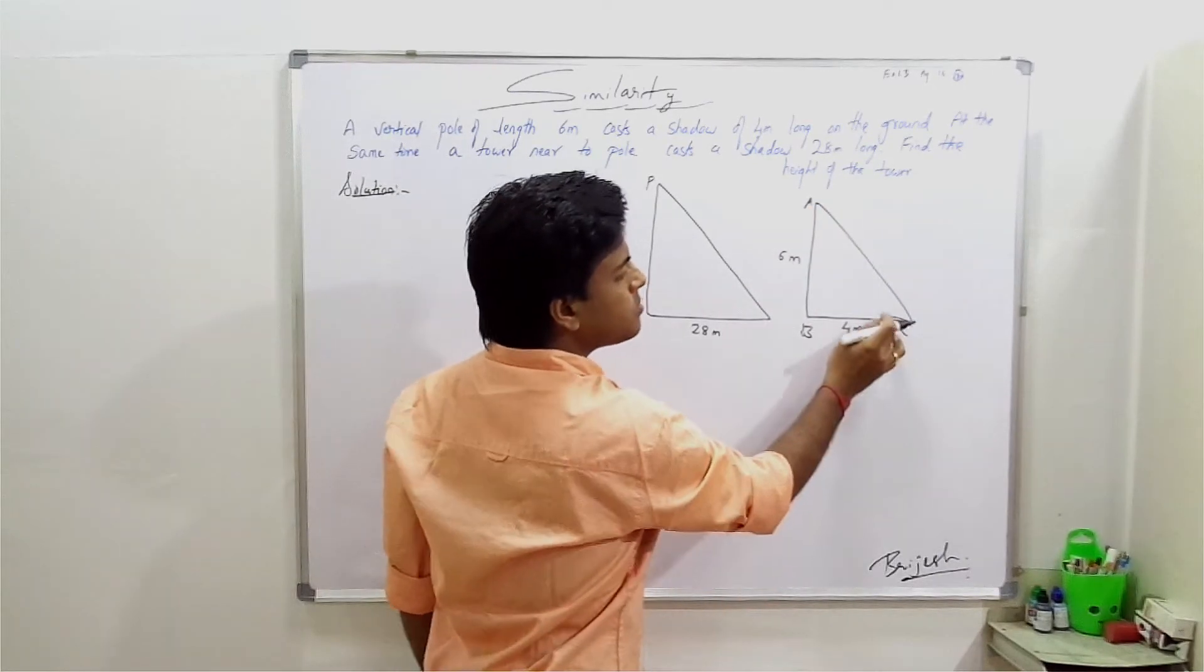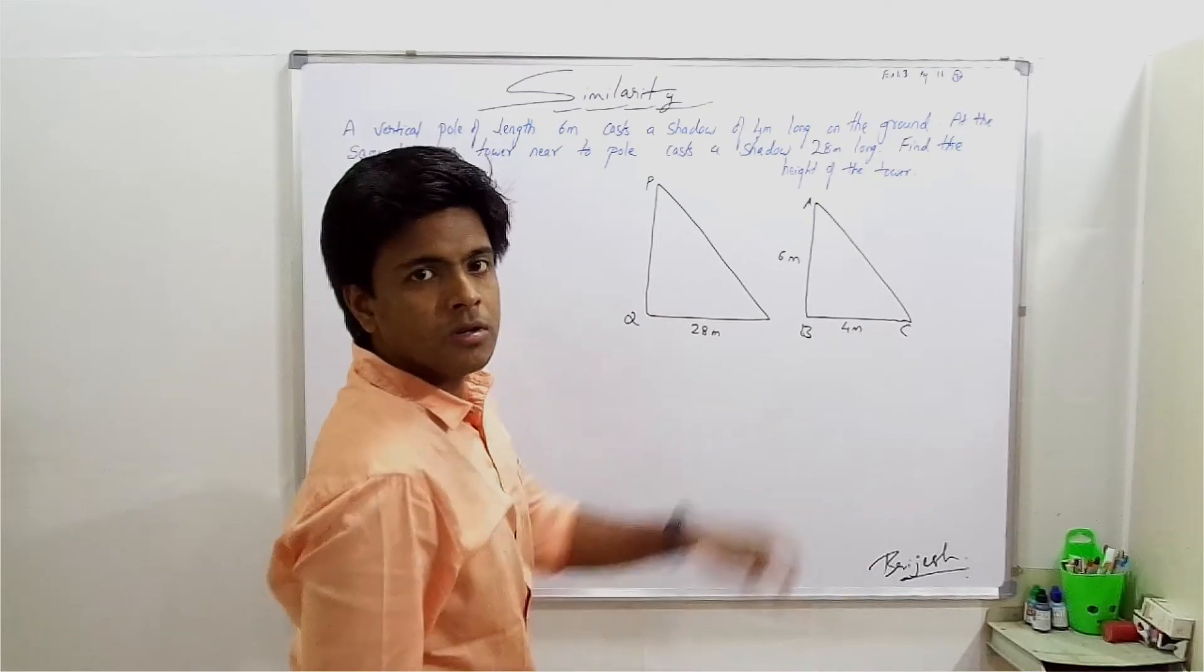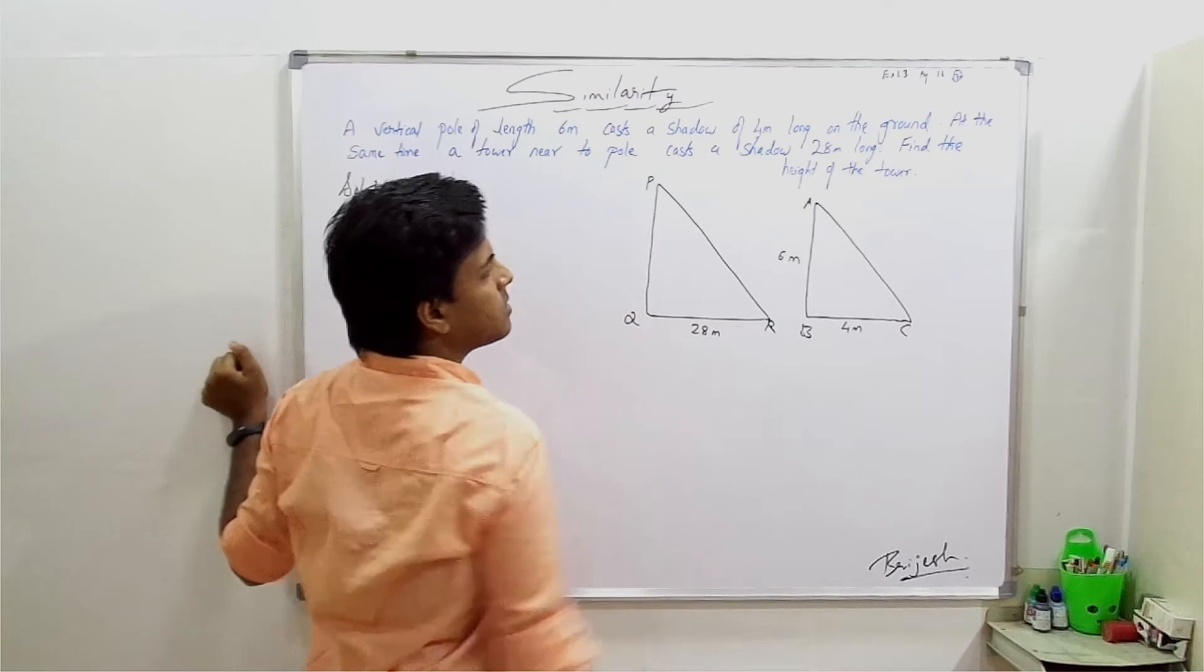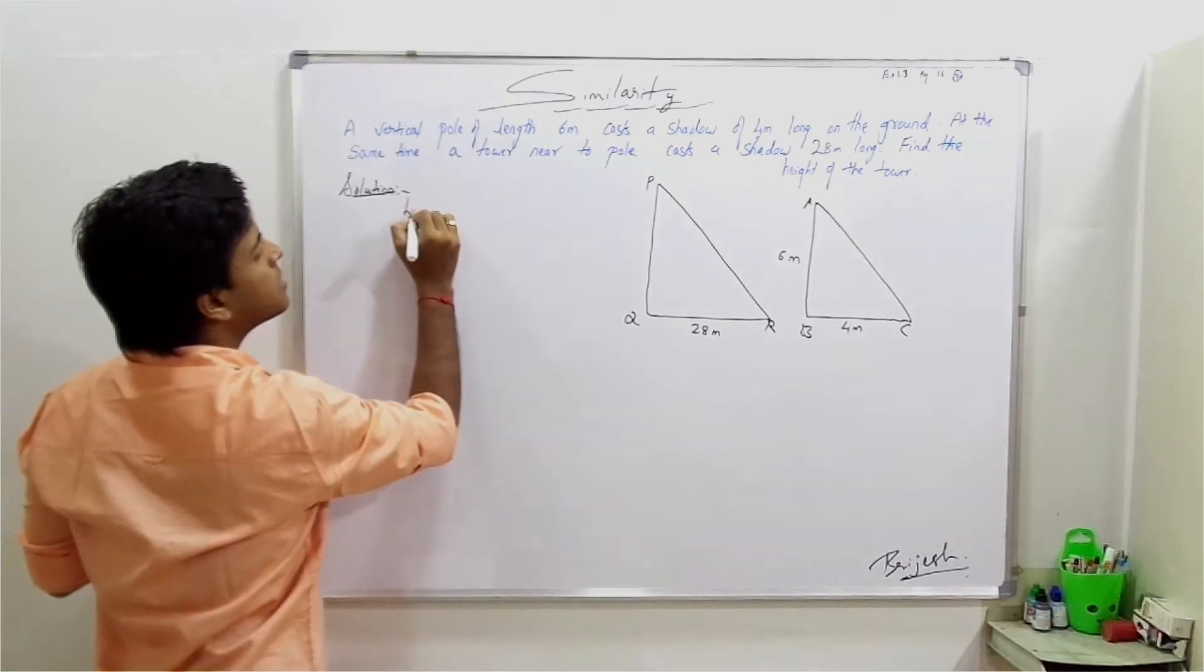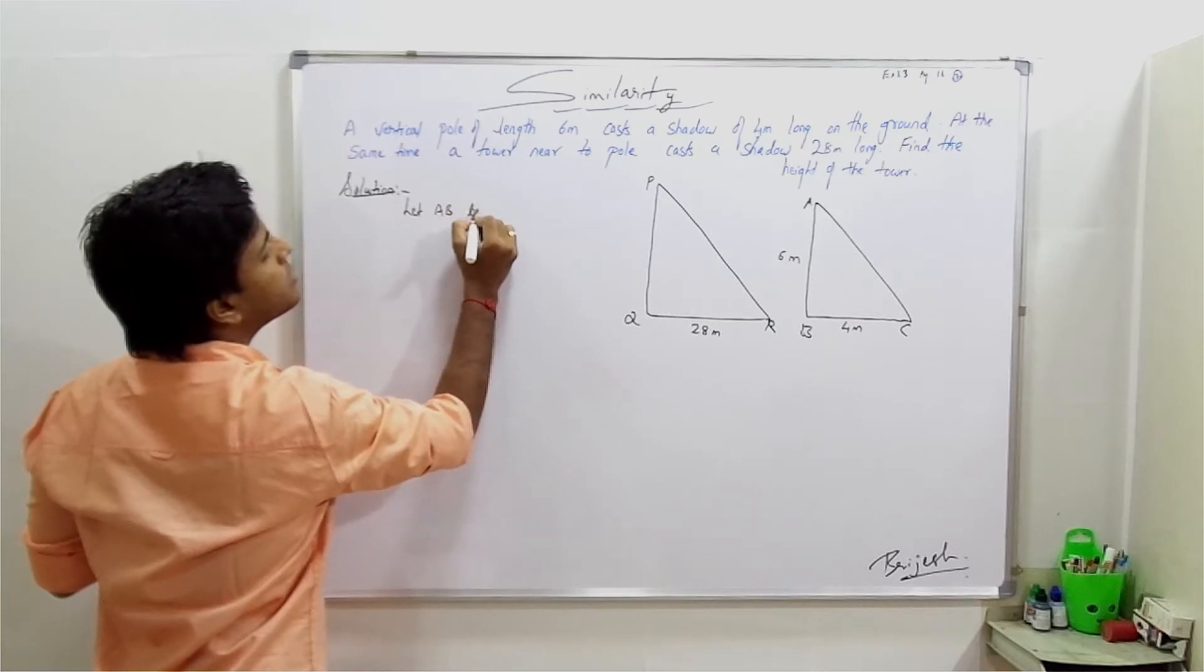Triangles are made because of the shadows. Let's label the points as AB and BC.